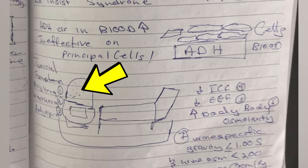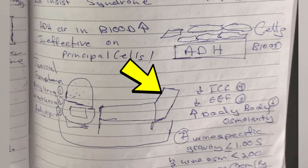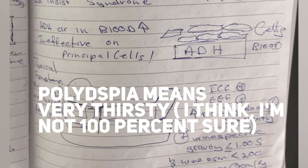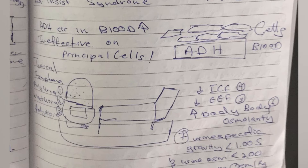Now we have a photo memory to help remember the symptoms. There is a toilet, a bed, and a cup below them. First, the toilet represents polyuria — you need to excrete a lot of urine. Second, the bed represents nocturia — at night you'll have to excrete a lot of urine. Third, below that is a cup representing polydipsia. Fourth and fifth are decreased intracellular fluid and decreased extracellular fluid, because if you're excreting water, it reduces all body fluids.